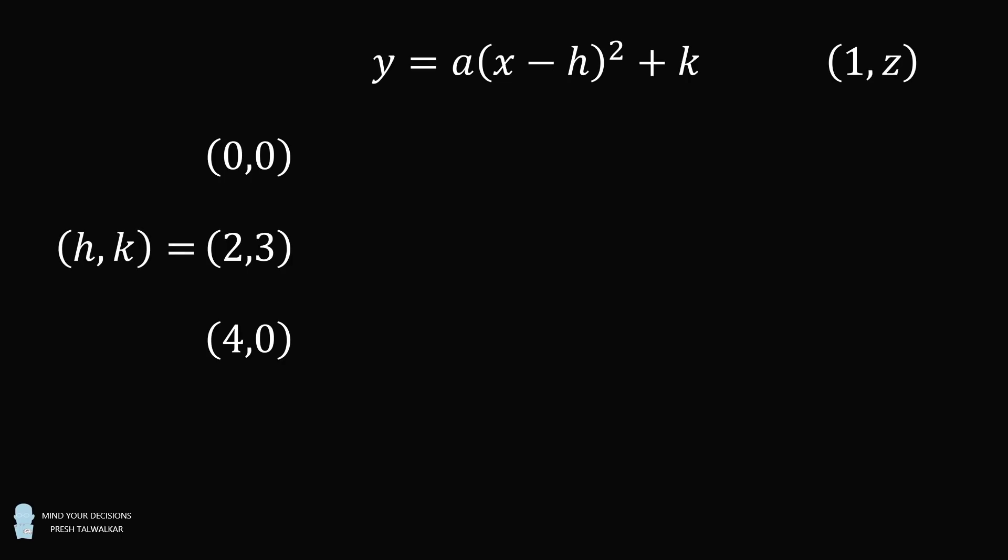We can now disregard the point (4,0) and let's substitute in the point (0,0). From here we get that 0 is equal to a multiplied by negative 2 squared plus 3. And from here we can solve for a. A will be equal to negative 3 over 4, which is equal to negative 0.75.